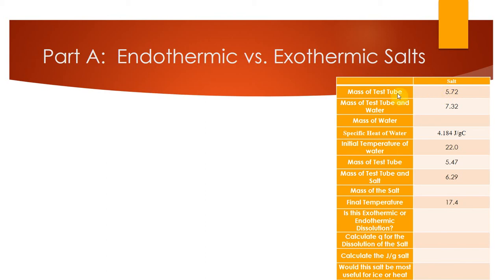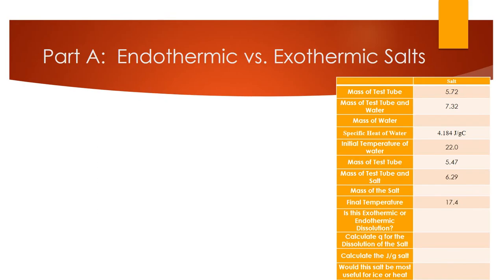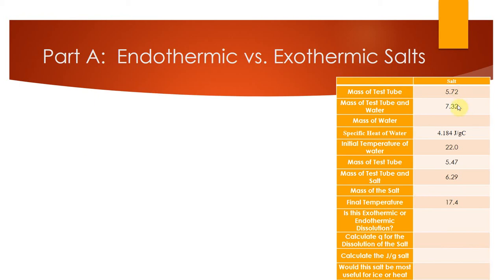For the data, you'll record the mass of each empty test tube, then the mass with water added, and the mass before and after adding the salt. From this you get the mass of the water and salt. You also record the initial and final temperatures so you can calculate the overall Q. To get the mass of water and salt, you just subtract the empty mass from the filled mass.